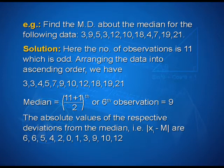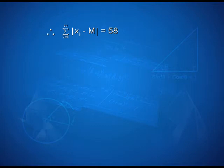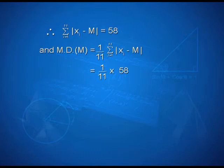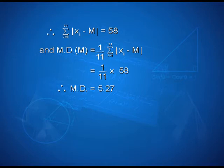The median is the 6th observation, which is 7. The absolute values of the deviations from the median, |xi − m|, are: 6, 6, 5, 4, 2, 0, 1, 3, 9, 10, 12. Therefore, Σ|xi − m| = 58, and mean deviation MD(m) = (1/11) × 58 = 5.27.